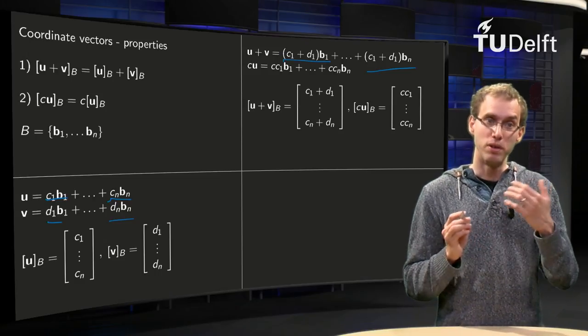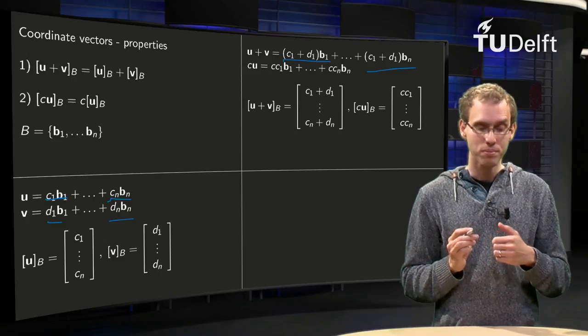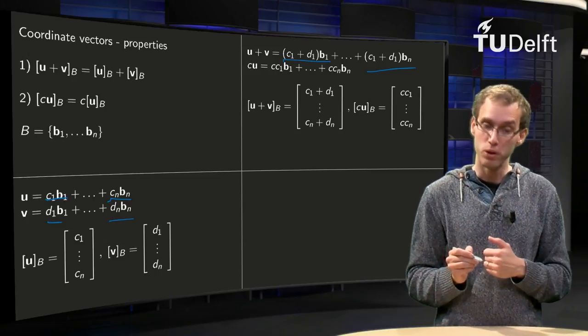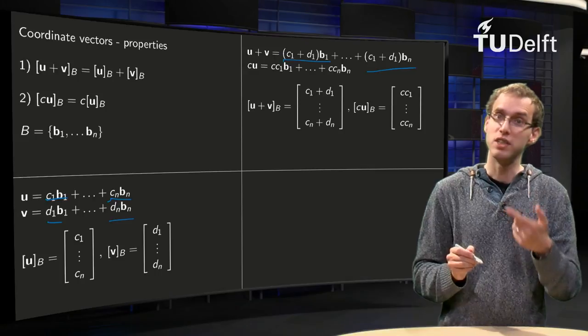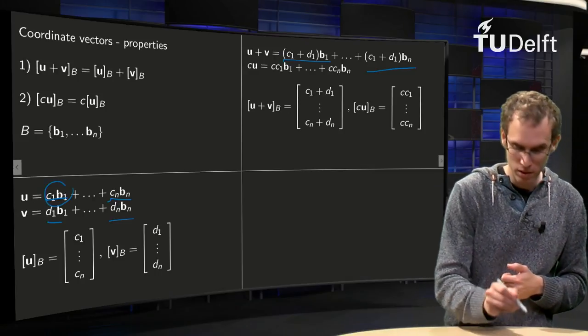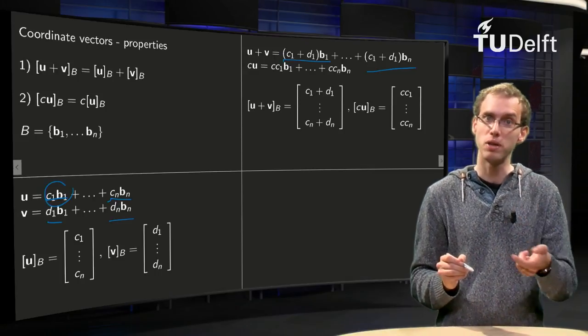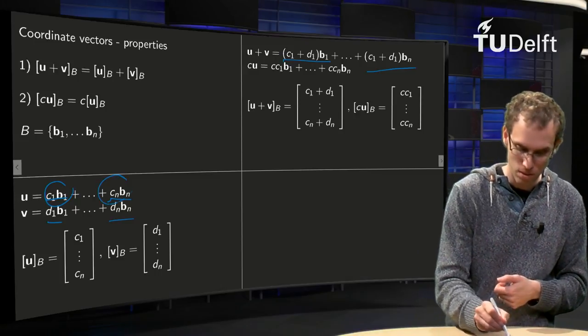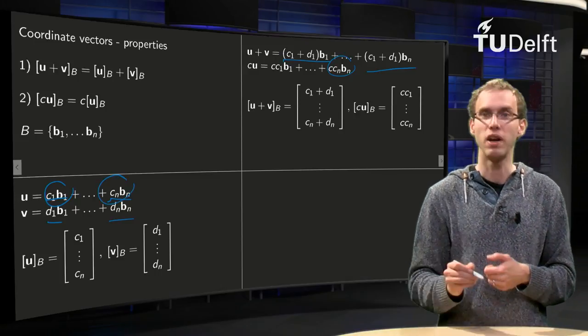And what happens if we multiply with a scalar? If we multiply for example u with a scalar, we get c times c1 times b1 plus c times c2 times b2 plus c times up to the last one plus cn times bn, that's over there.